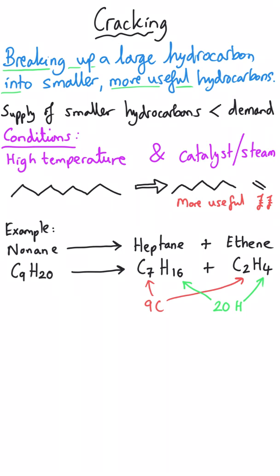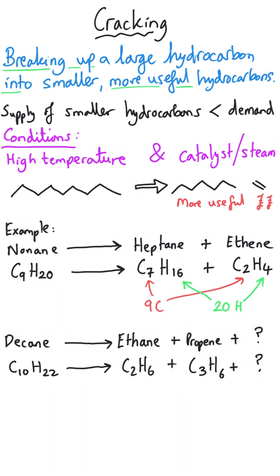It's not always this simple at A level. You might be faced with a situation where something such as decane turns into ethane and propene and one other product, and so what you have to do is work out what that other product is. Decane's got 10 carbons, ethane has 2, propene has 3, which means my third product must be C5.